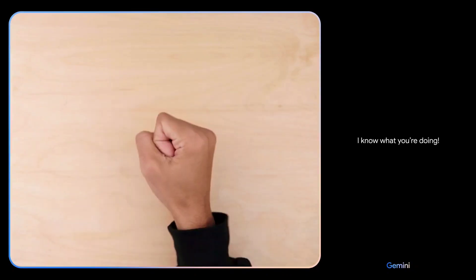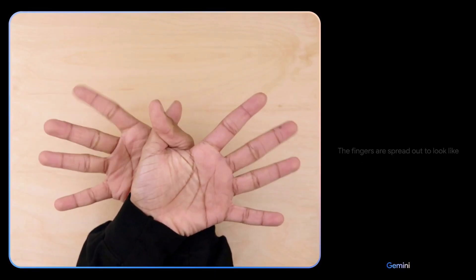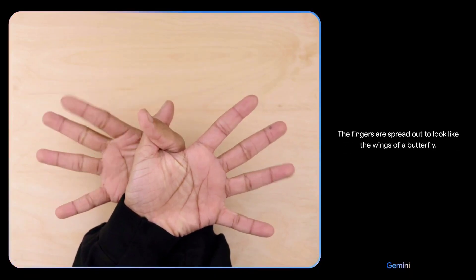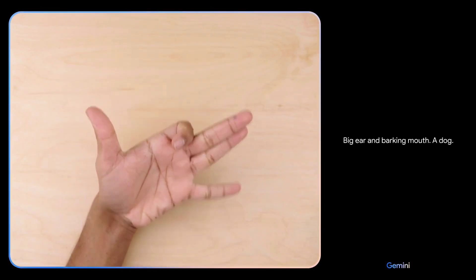I know what you're doing. You're playing rock, paper, scissors. What do you see now? The fingers are spread out to look like the wings of a butterfly. What's this? Big ear and barking mouth. A dog. Sweet.